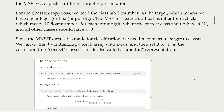We can do this by initializing a torch array with zeros and setting it to one at the correct class. This is called a one-hot representation.